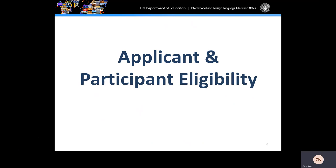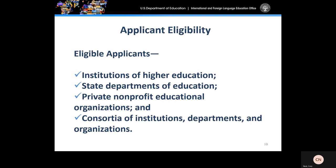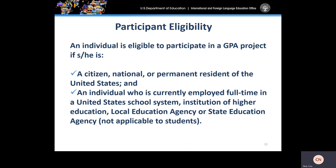Eligible applicants for FY 2022 cycle are institutions of higher education, state departments of education, private nonprofit education organizations, and consortia of institutions, departments, and organizations. An individual is eligible to participate in a GPA short-term project if he or she is a citizen, national, or permanent resident of the United States, and is currently employed full-time in a United States school system, institution of higher education, local education agency, or state education agency.